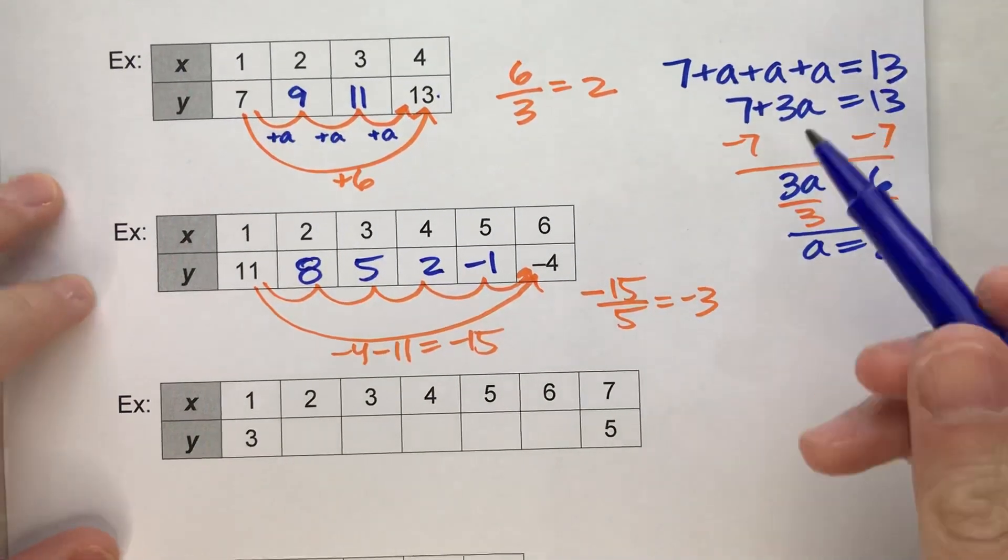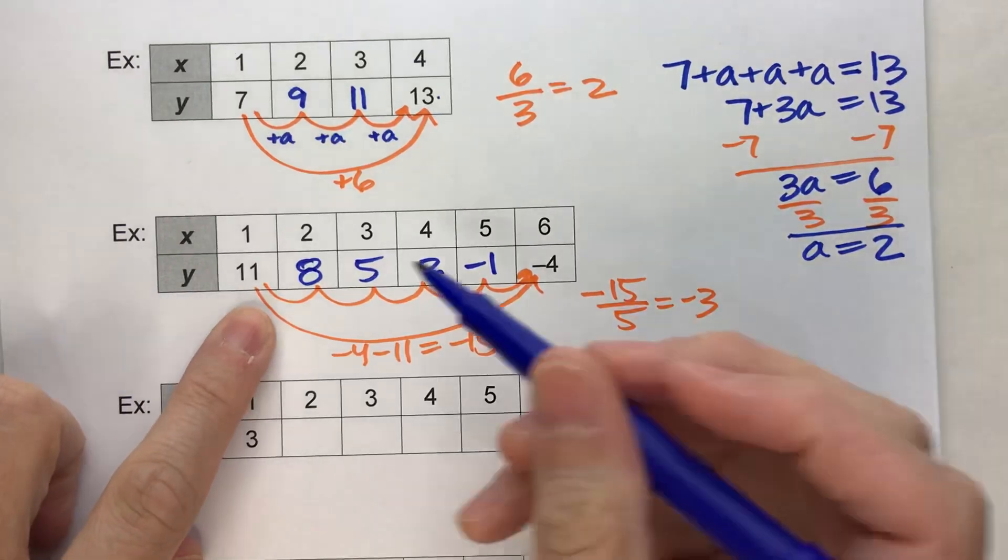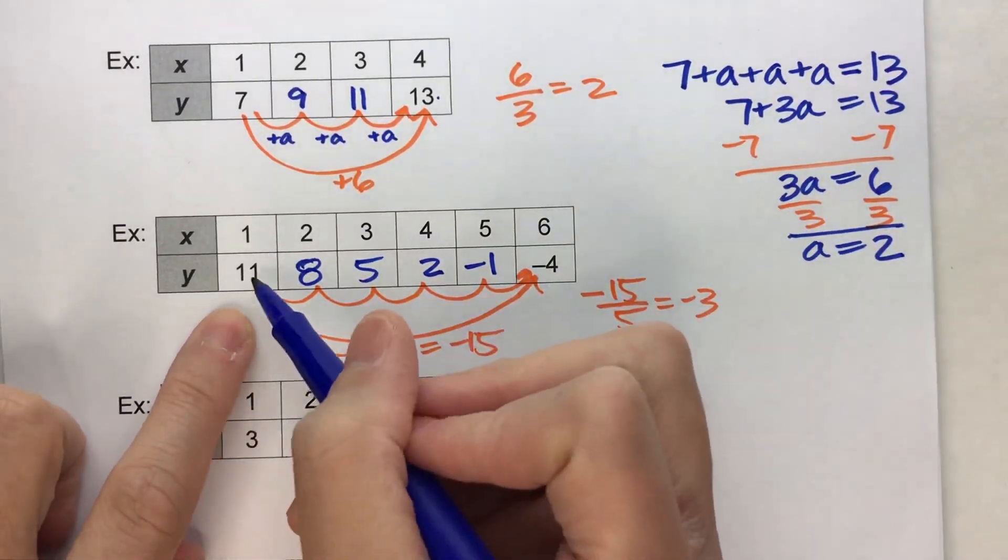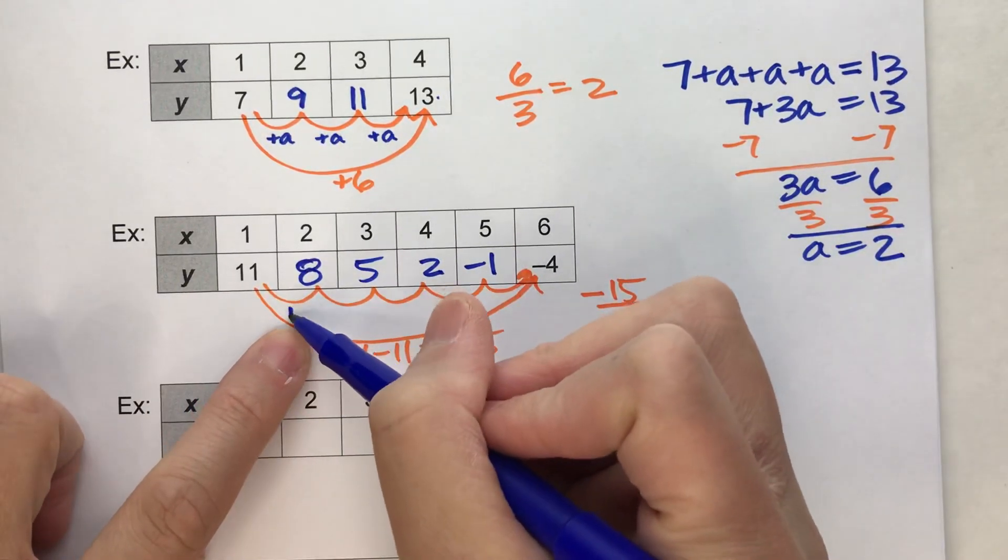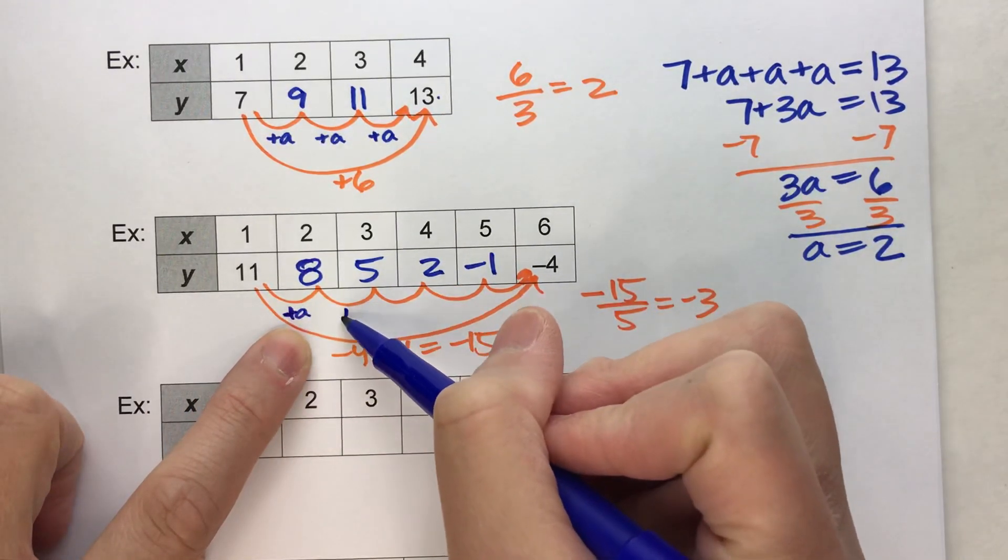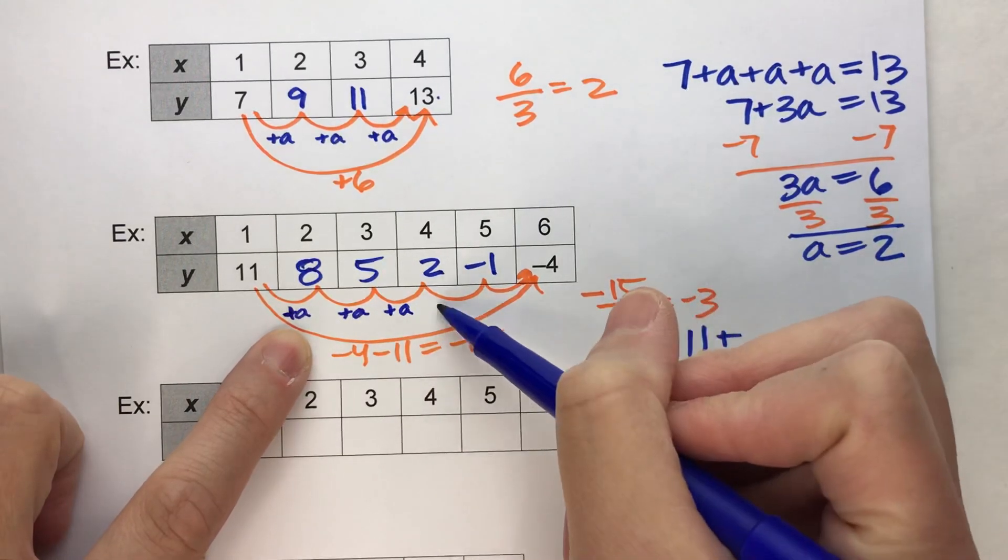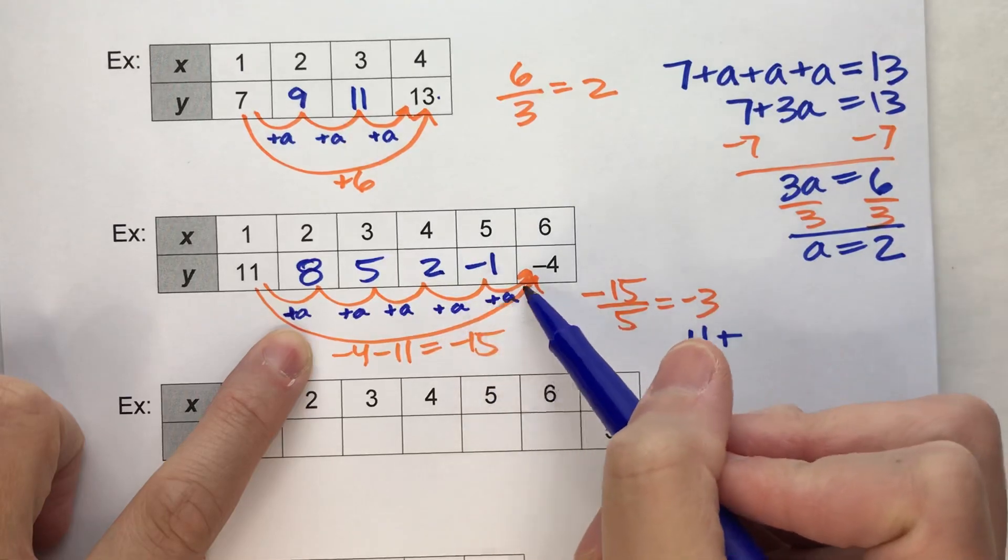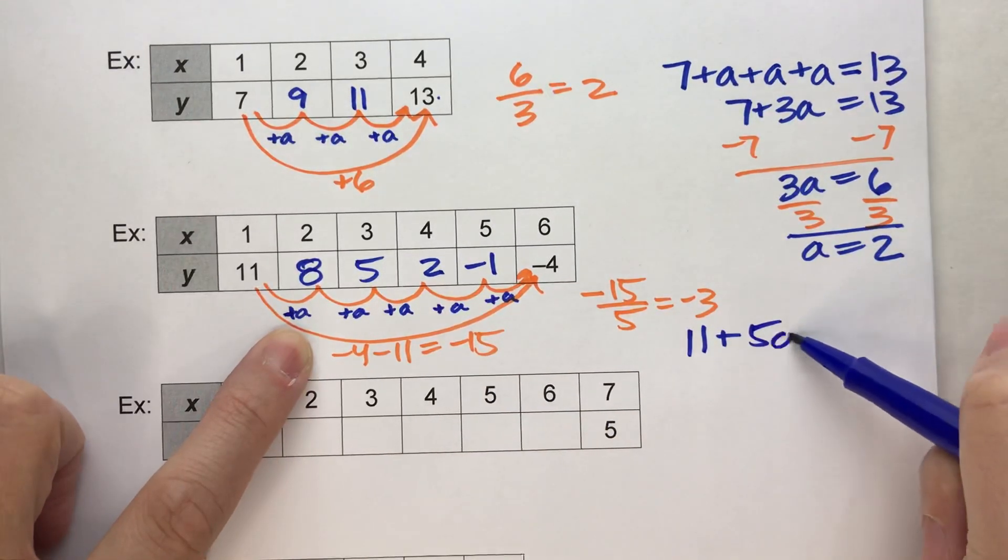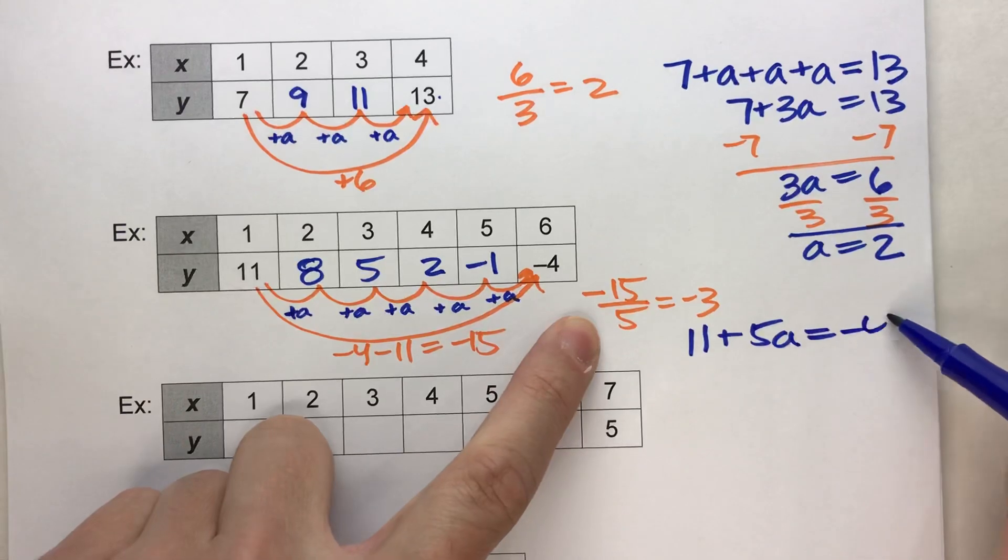Now, again, if you like it the algebra way, we'll set it up. It starts at 11. And we're repeatedly adding, we'll call it A again just to be consistent. We're adding A. How many A's are we adding? 1, 2, 3, 4, 5 A's. And we end up at negative 4.